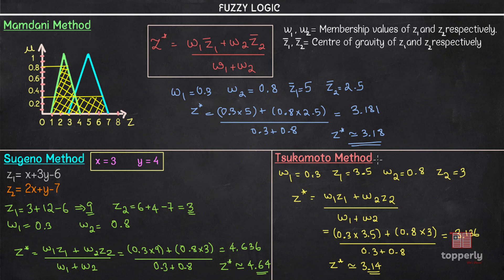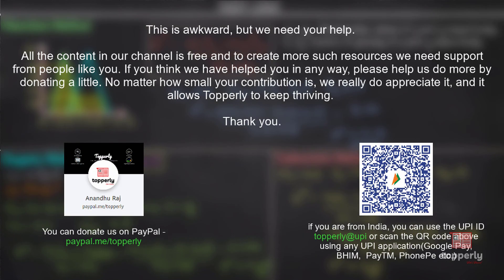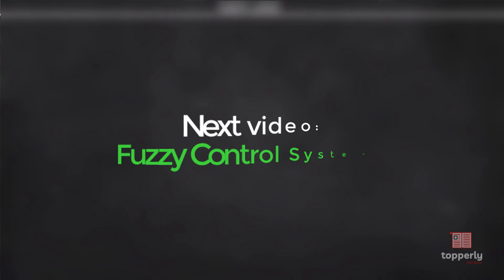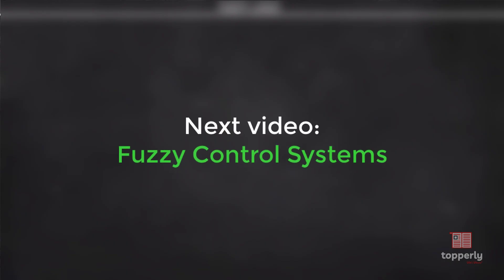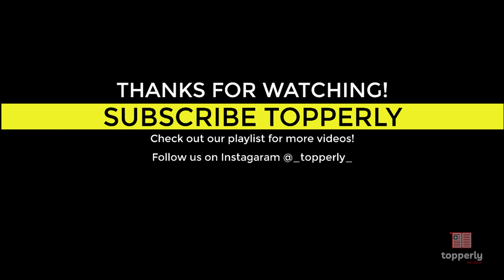So I have solved this example using the Mamdani, Sugeno, and Tsukamoto methods. I hope the concepts taught in this lecture were clear. If anyone has any doubts, please feel free to ask in the comment section — either we or another viewer will help you out. If you found this lecture useful, please like the video and subscribe to the channel. In the next lecture we will be learning about fuzzy control systems. Thank you for watching and have a great day!